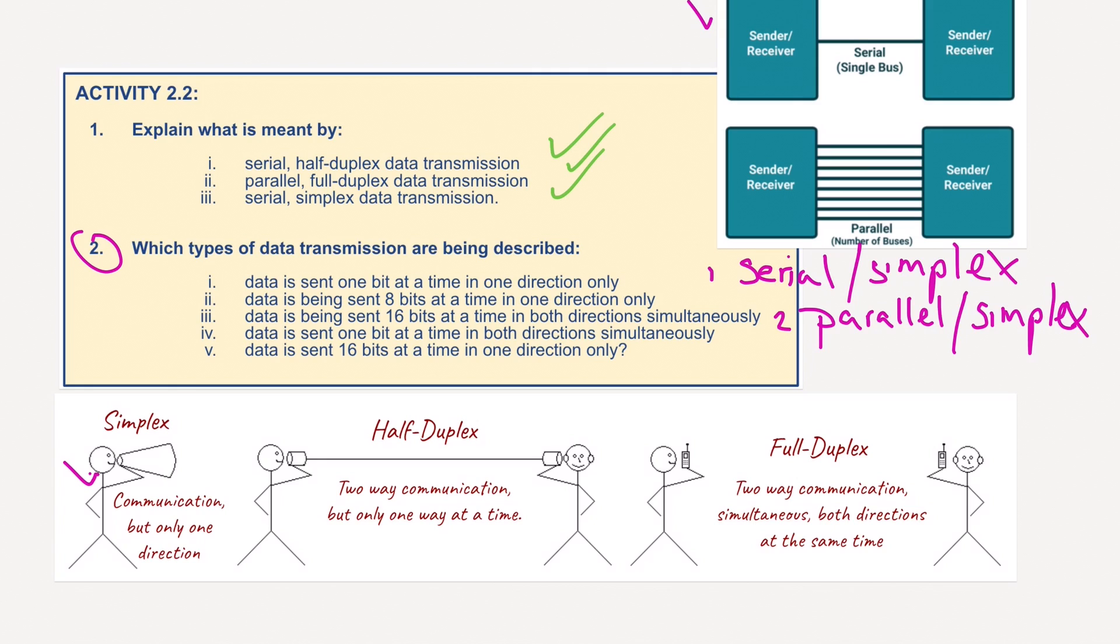Question three, data is being sent 16 bits at a time in both directions simultaneously, meaning both at the same time. So question three, nice and easy, we're going to use parallel again, and this time we're using full-duplex. Data is sent one bit at a time in both directions simultaneously. Now number four must be serial, and again, we're using full-duplex.